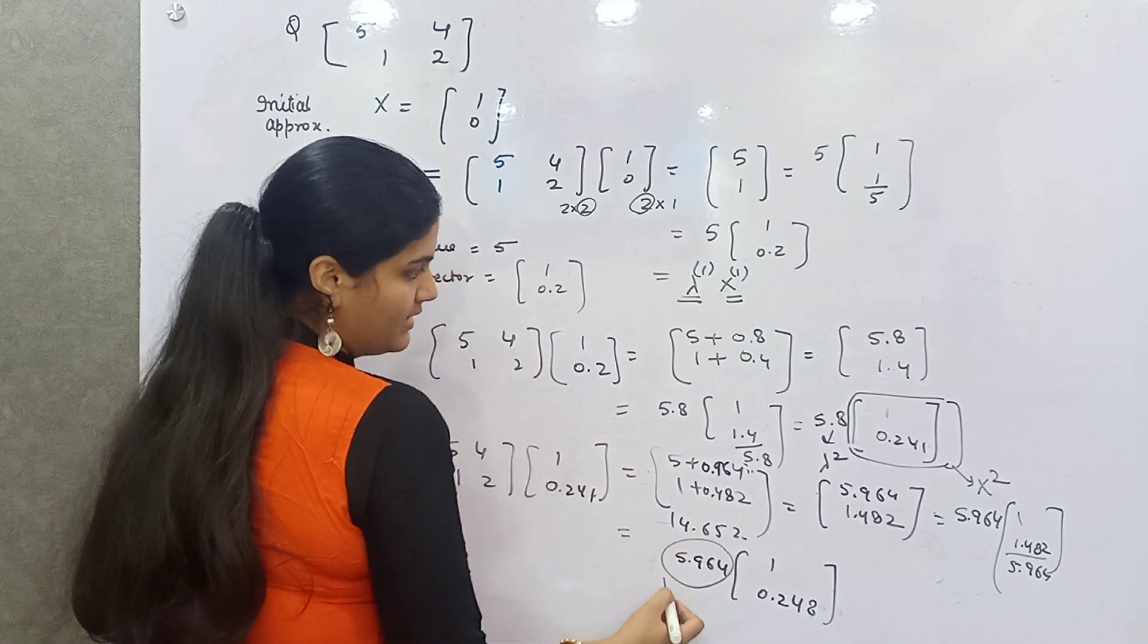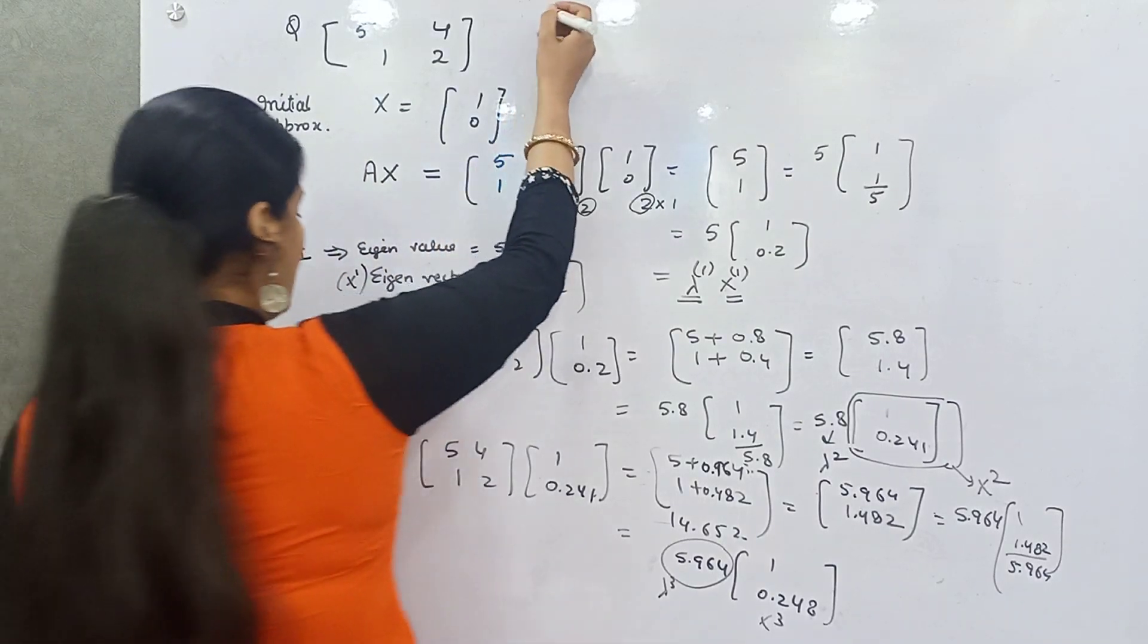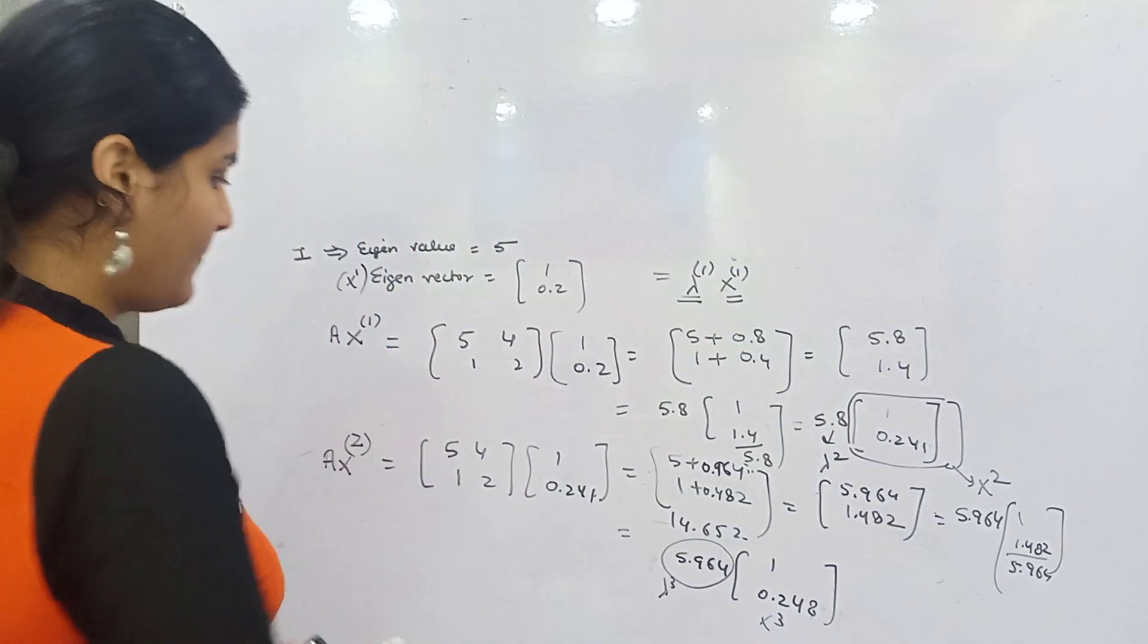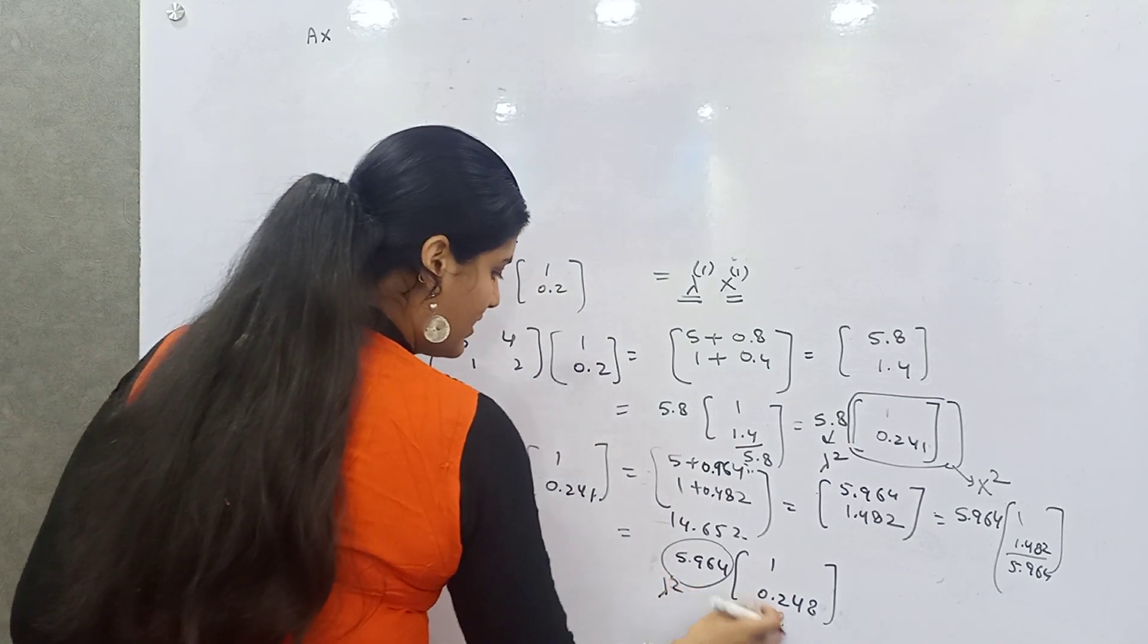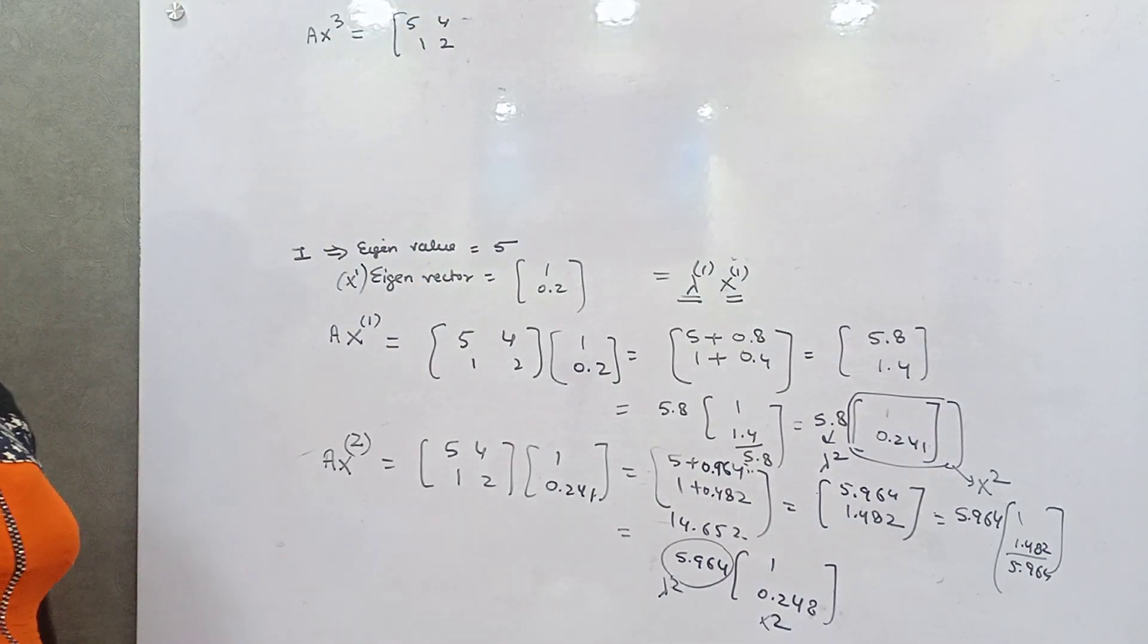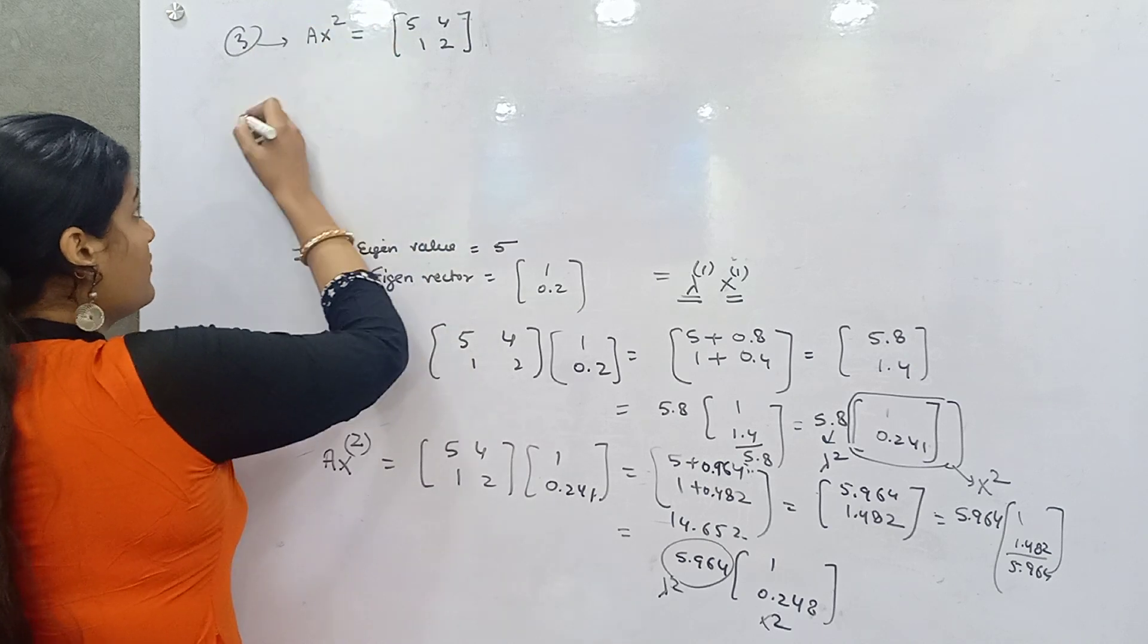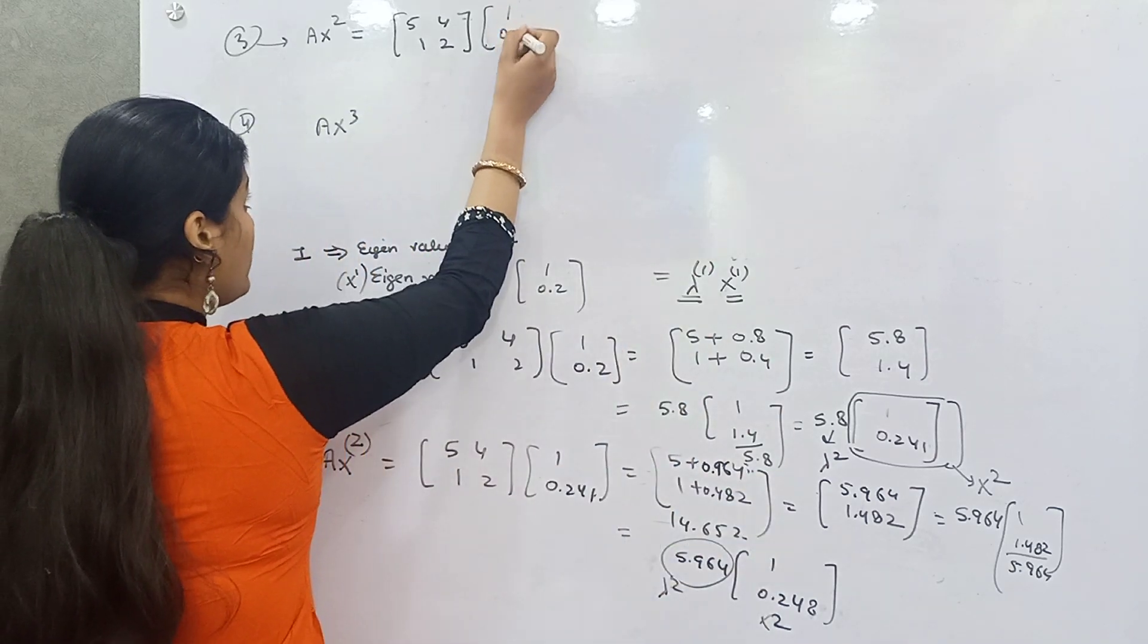This is your lambda 3 and this is your X3. For finding out fourth eigenvalue and vector, what you need to take? AX3. So A is this and X3 is [1; 0.249]. Your A is [5,4; 1,2] and X2 is [1; 0.248].